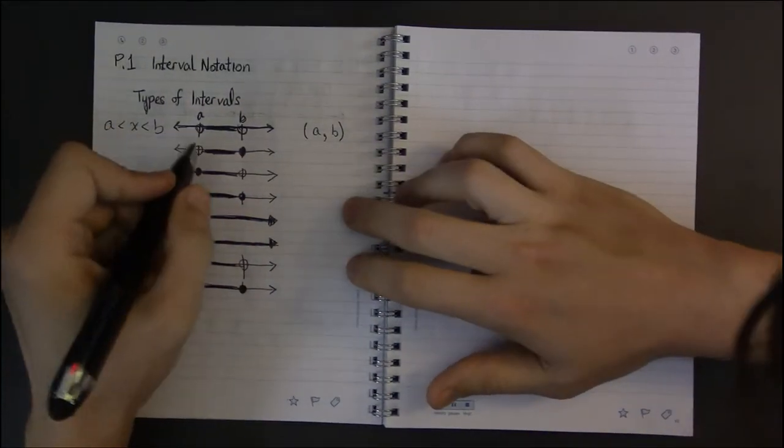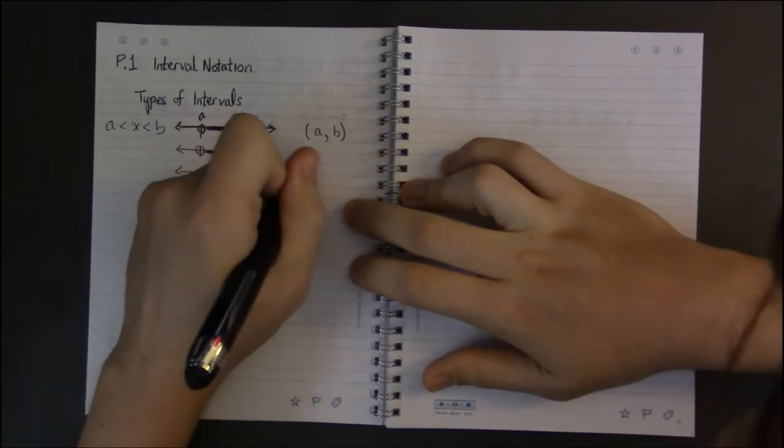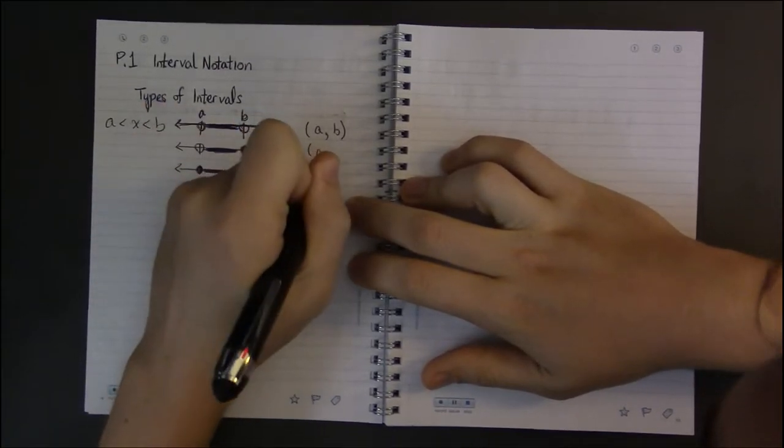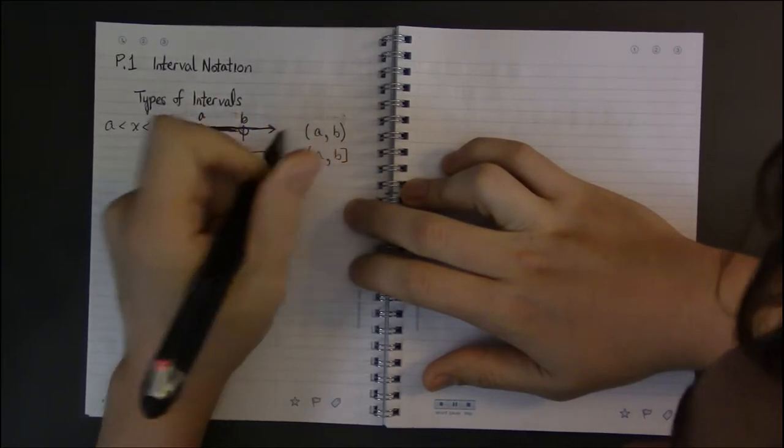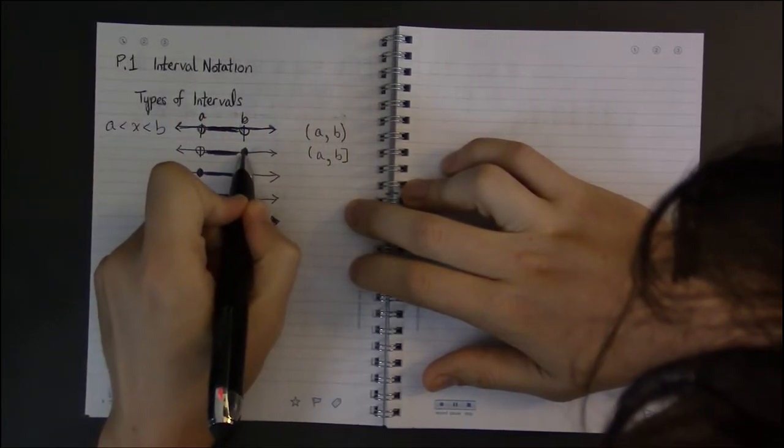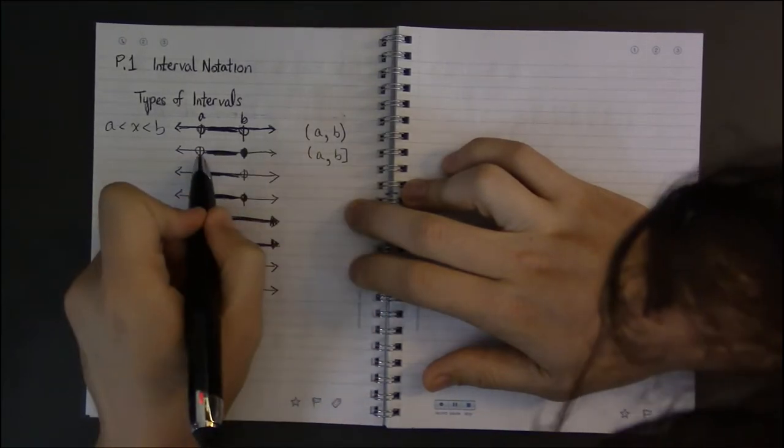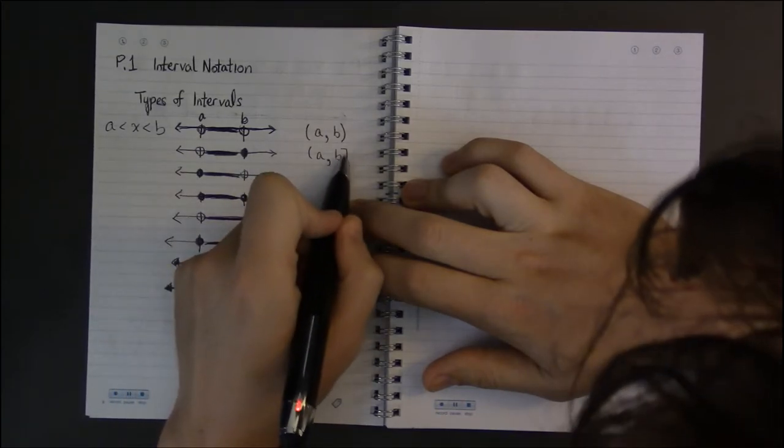But whenever I have a closed dot, it always corresponds to a closed bracket. Open dot parentheses, closed dot bracket.